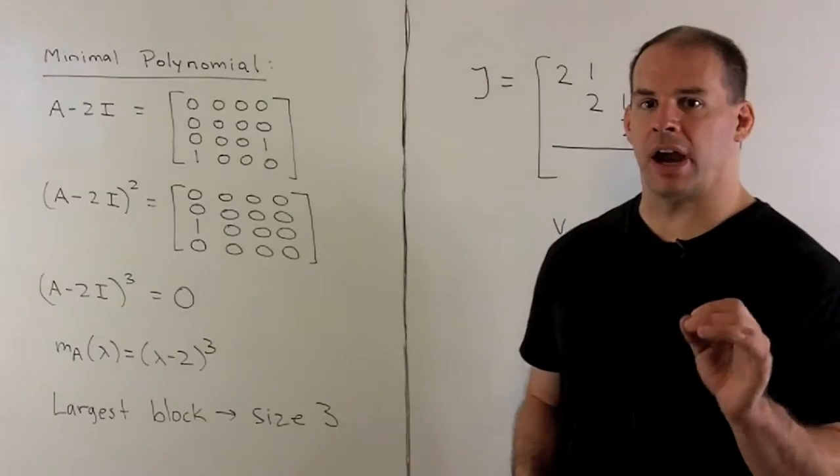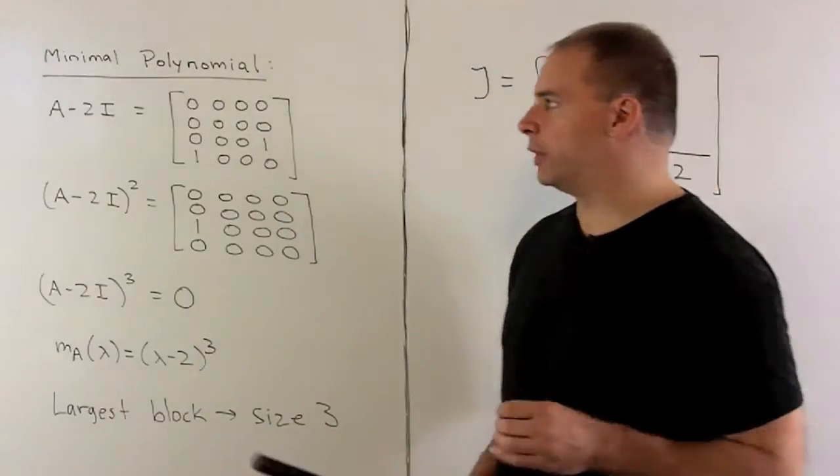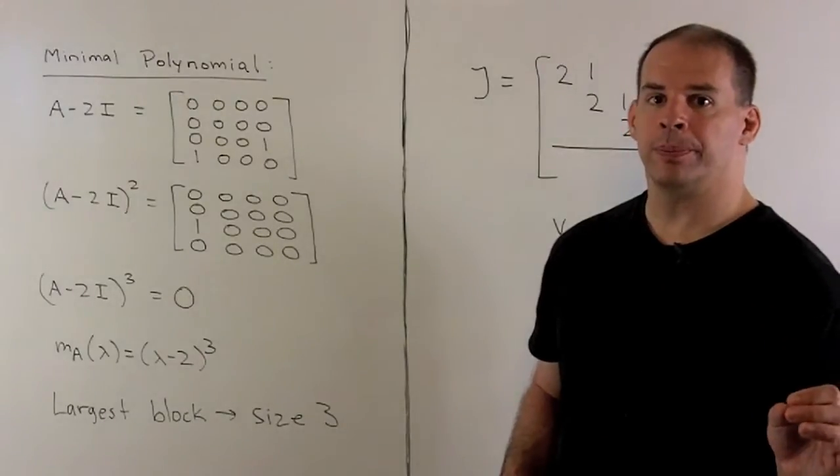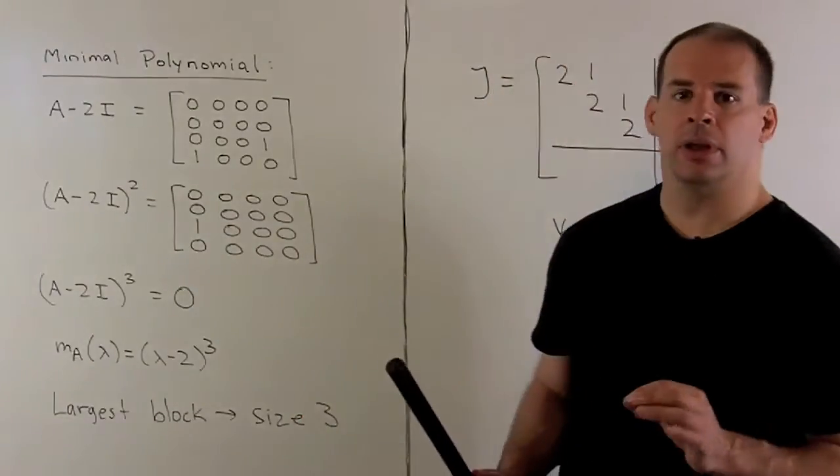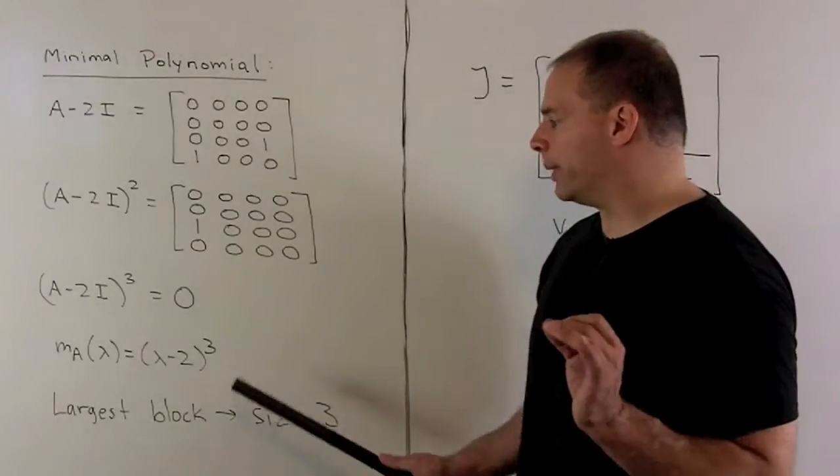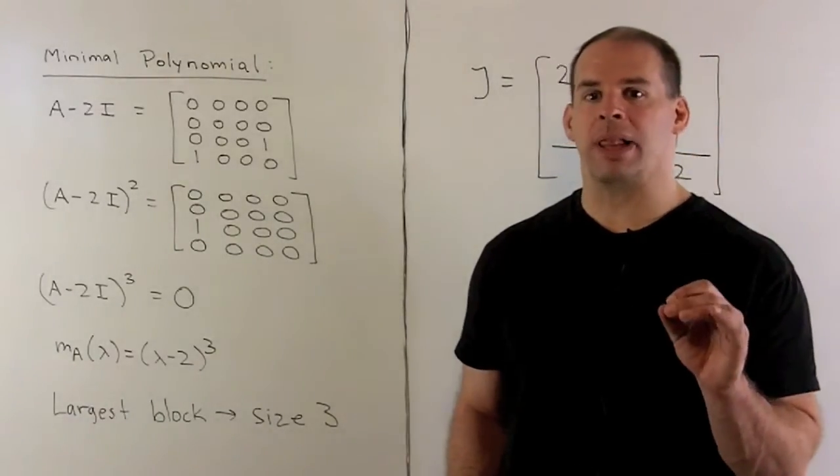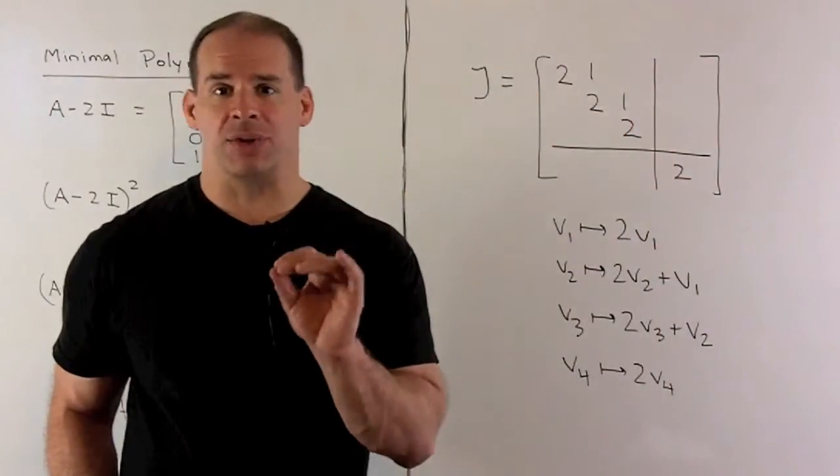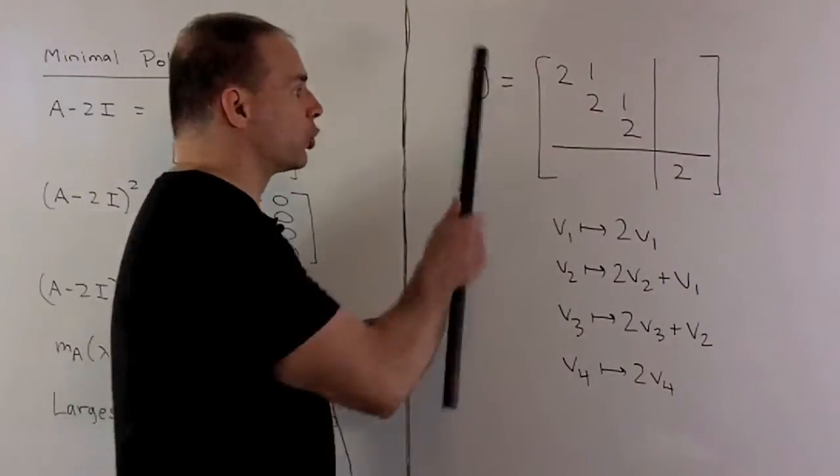The minimal polynomial divides the characteristic polynomial, so we know that it's going to be some power of lambda minus 2. If we compute A minus 2I, we get a non-zero matrix, so it's not lambda minus 2. If we square A minus 2I, it's still not equal to 0, so it's not lambda minus 2 squared. But if we cube A minus 2I, we get 0, so our minimal polynomial is lambda minus 2 cubed. That means the size of our largest Jordan block is equal to 3. Since we have two Jordan blocks, one has size 3, the other one must have size 1. If we put the 3 by 3 block in first, our Jordan form looks like this.